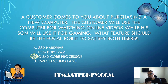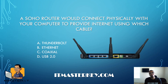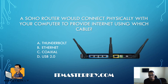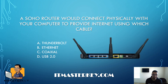Two cooling fans are important no matter what you're doing, but for this scenario it would be a later thought compared to the processor. Acronyms are a huge thing on this test — if you ever see an acronym you don't know, look it up so you know what's going on when you're on the exam. SOHO stands for small office, home office. A SOHO router would connect physically with your computer to provide internet using which cable? Easy — Ethernet.